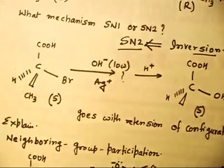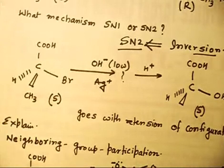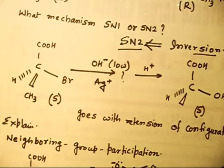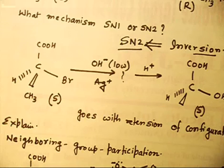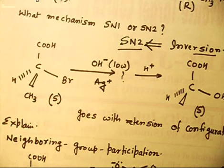To explain this, you need a concept called neighboring group participation. If you have heard about this concept, let us try to apply it. I will give you a hint: you have to make a three-membered epoxide intermediate and then attack. That is the hint.